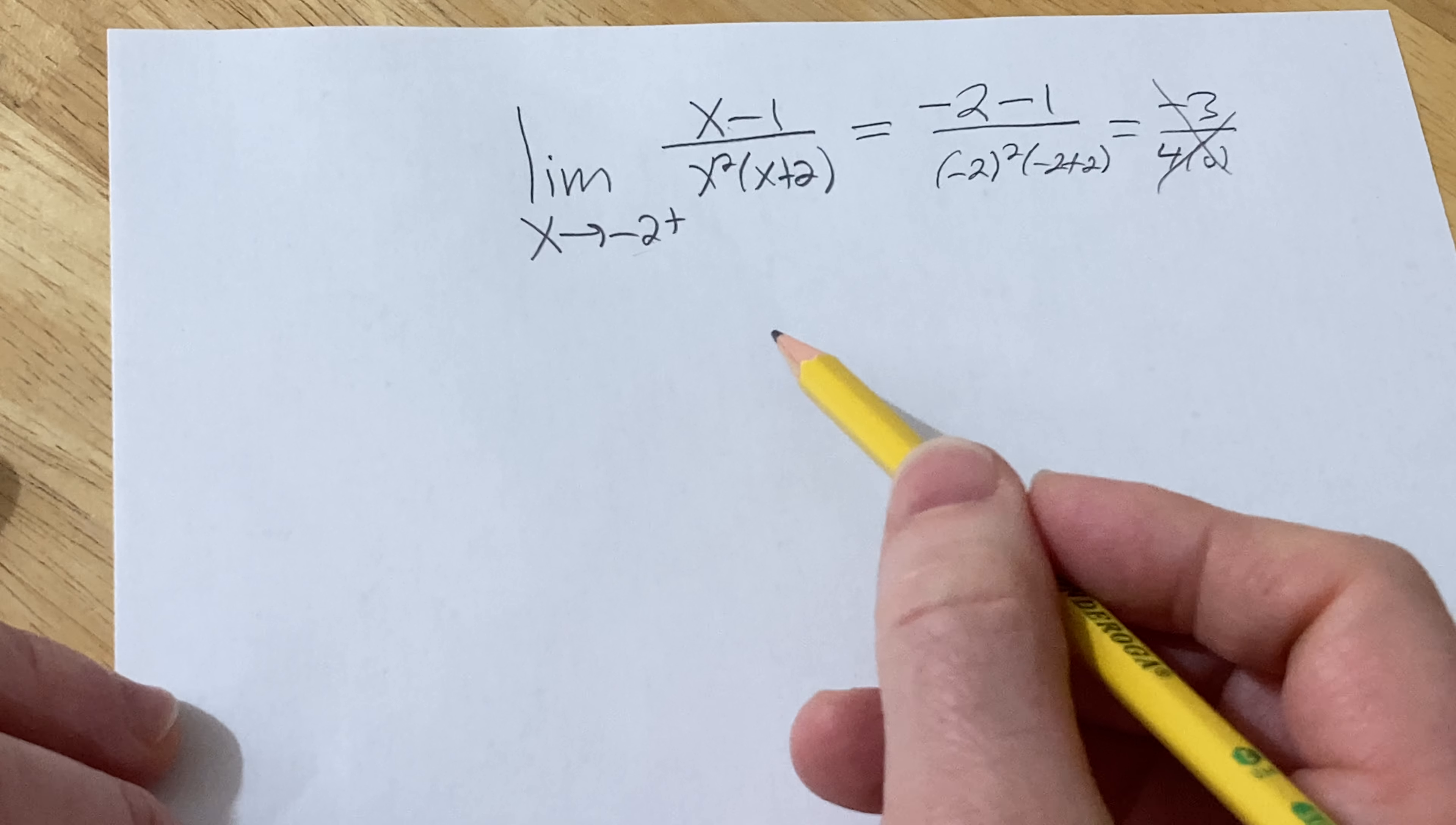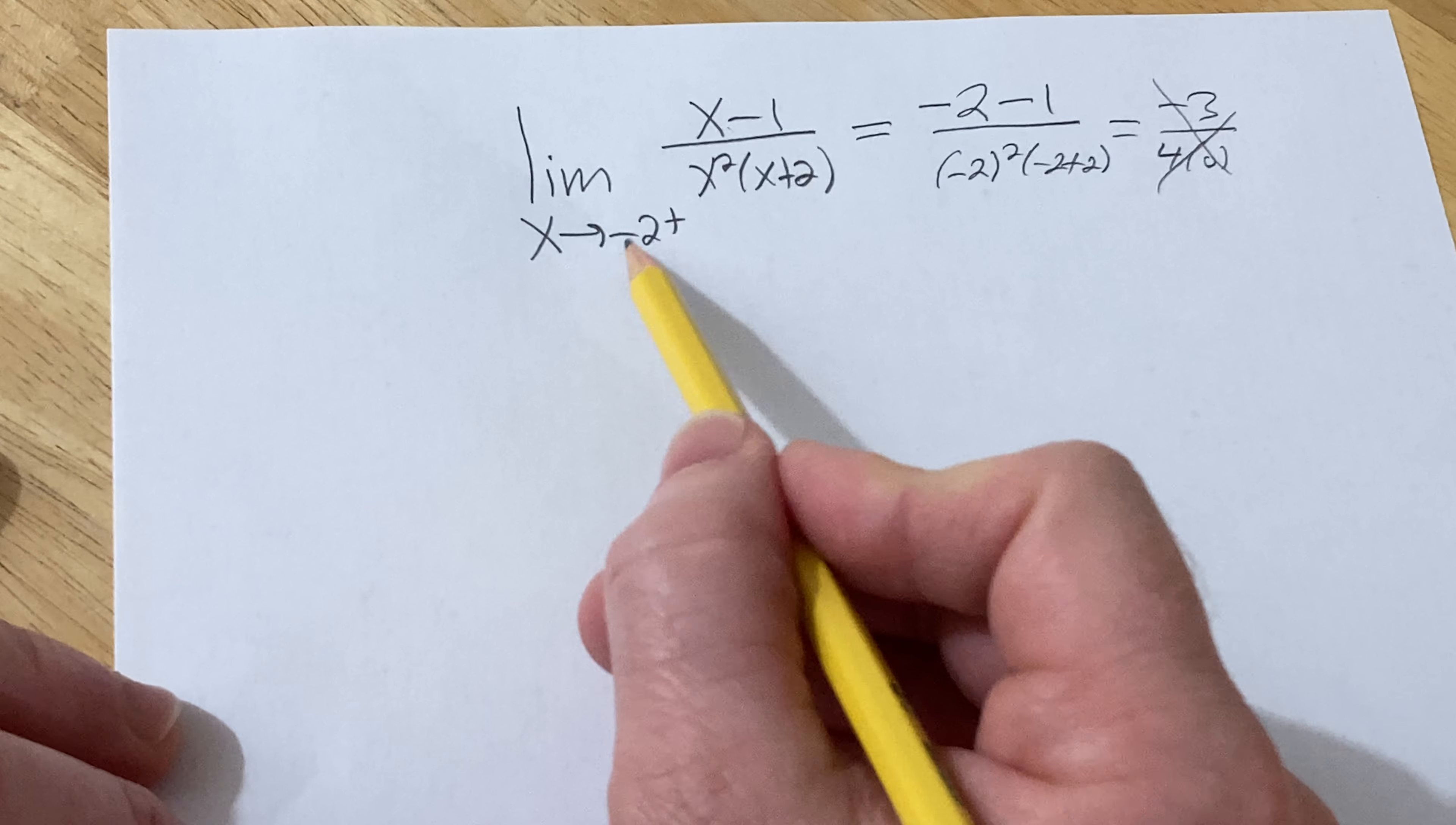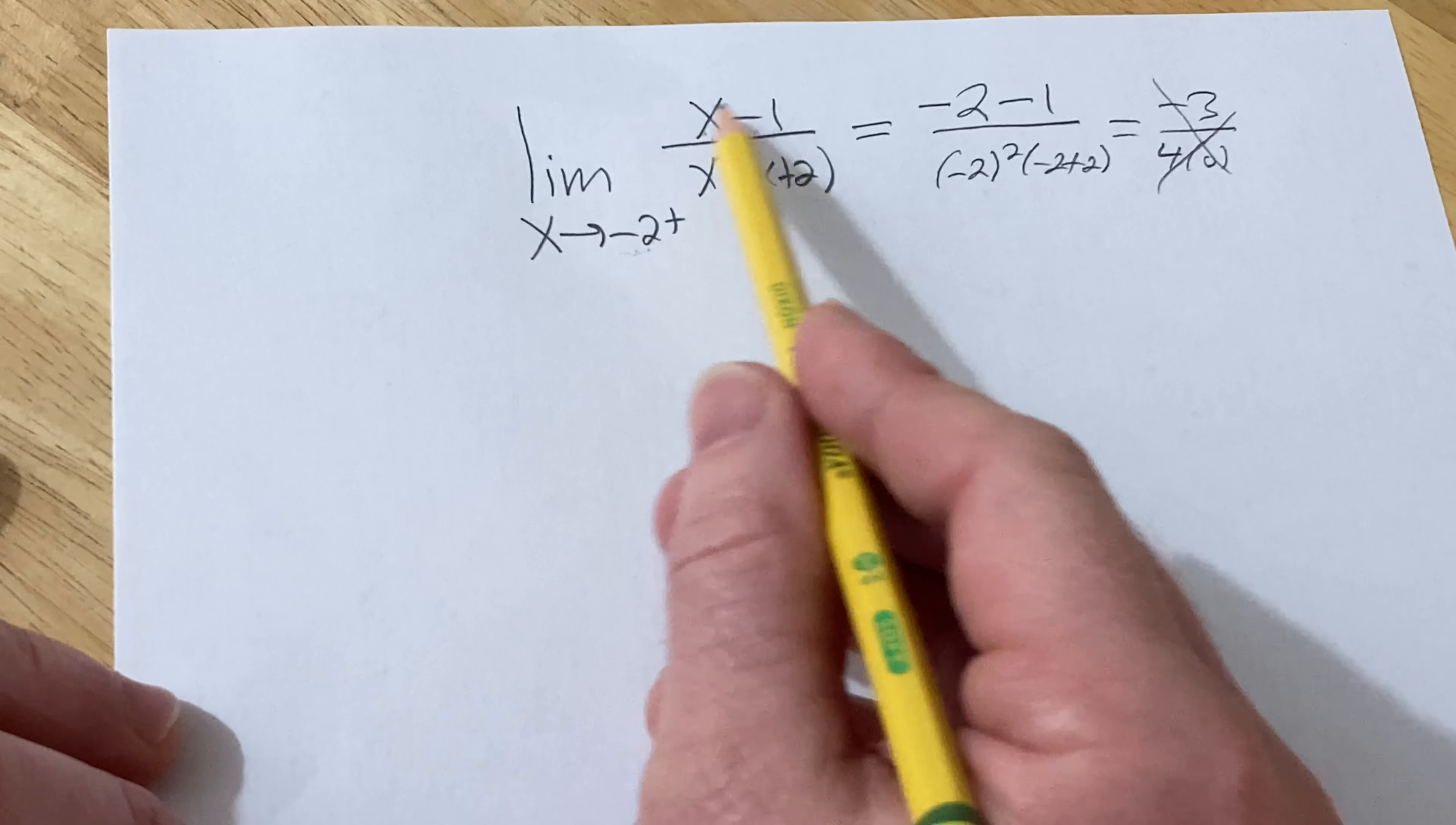The way to approach this is to try to just look at it intuitively and see if we can come up with the answer. When you're getting really close to negative 2 in the numerator, you're basically going to get something really close to negative 2 minus 1, so you're going to get a negative number.